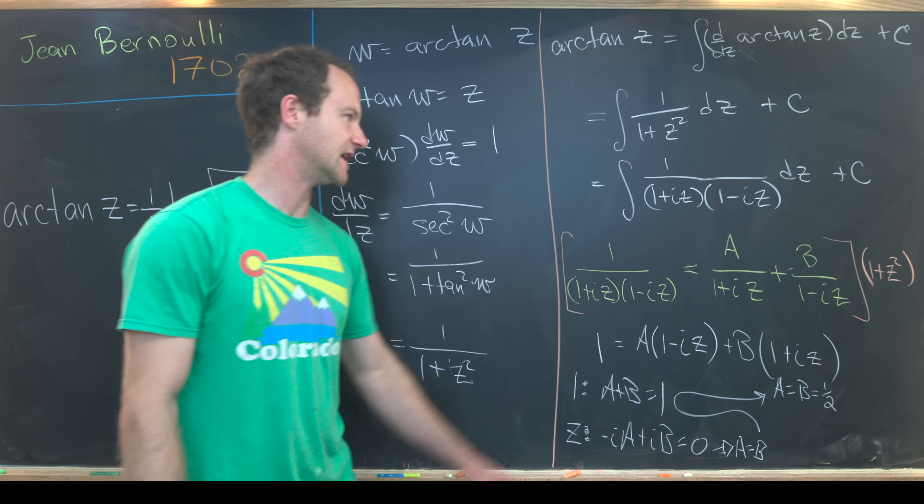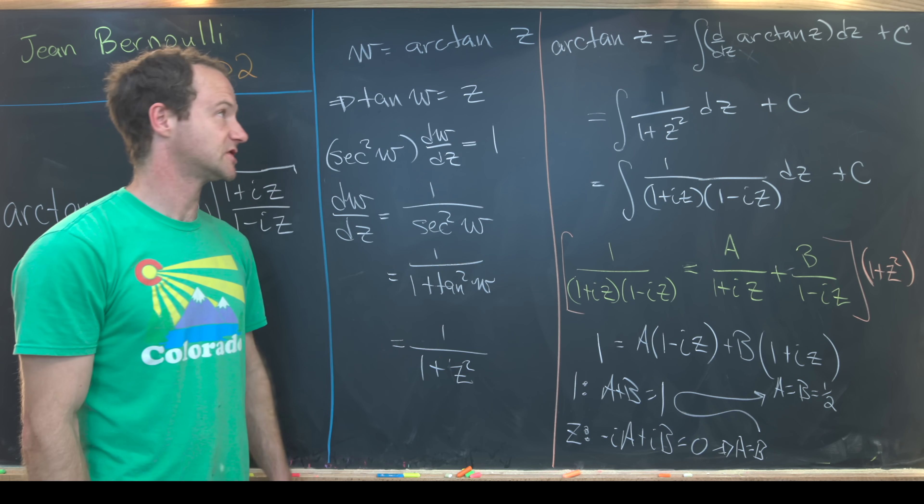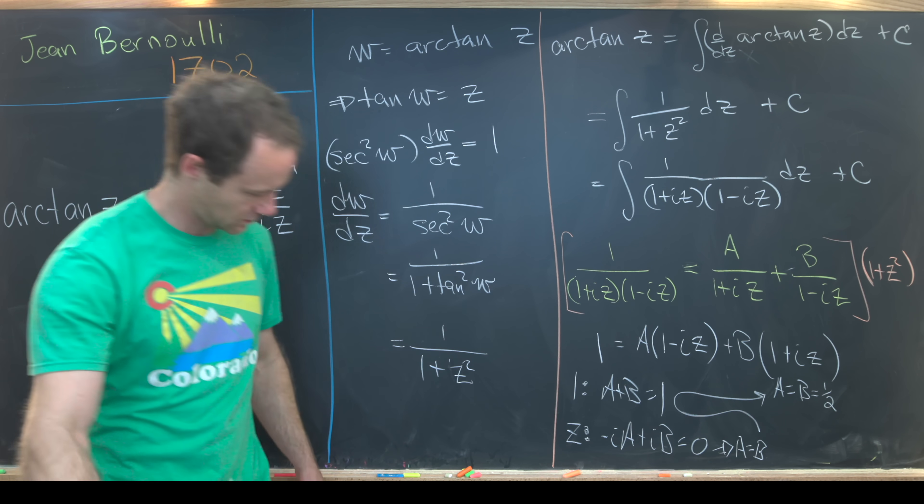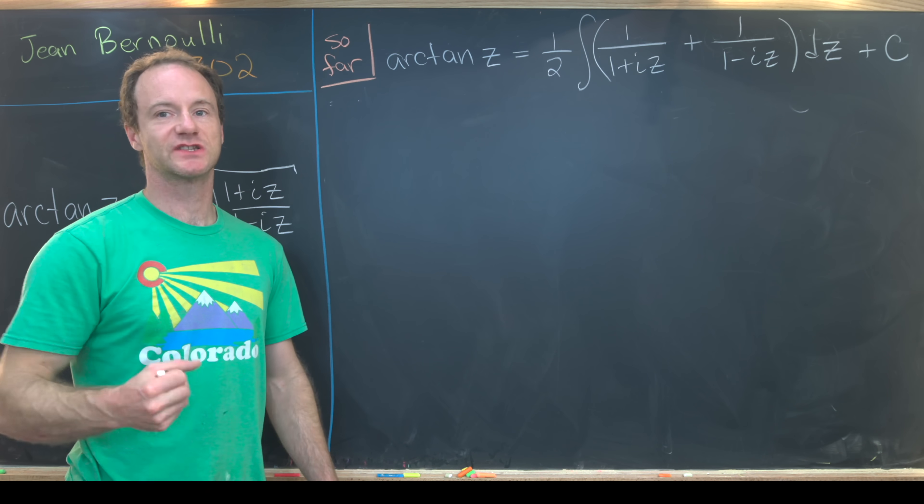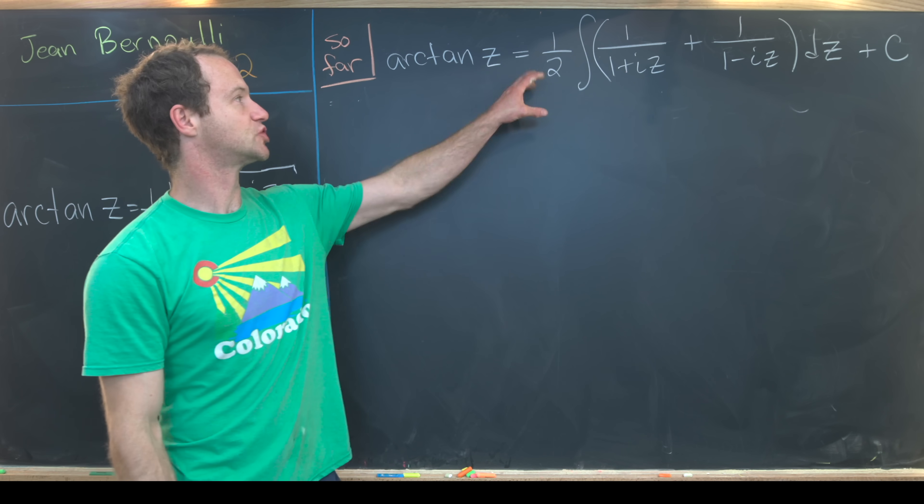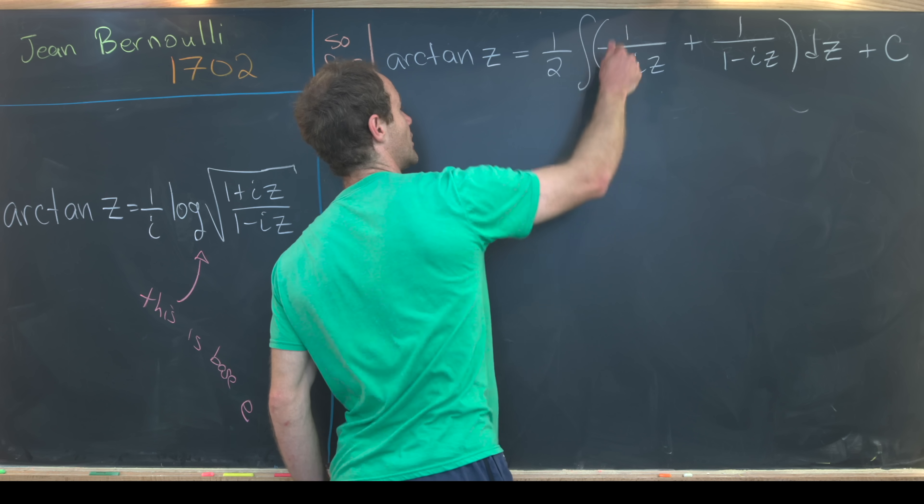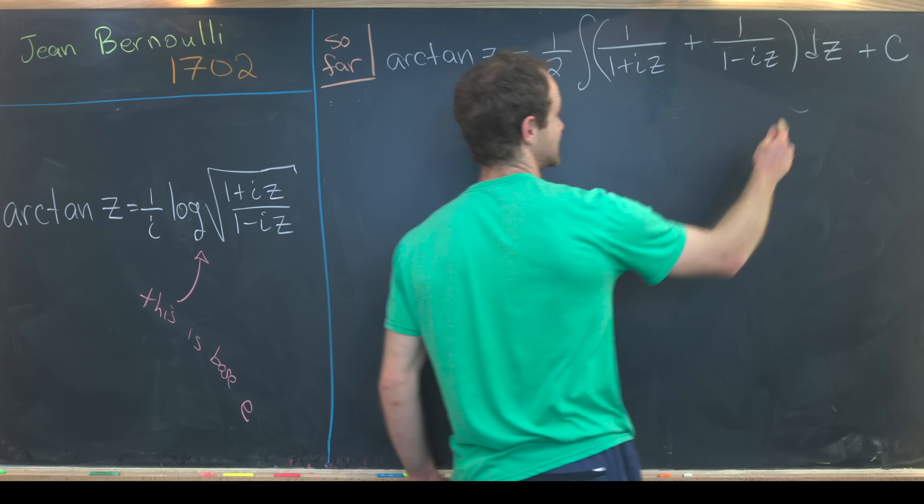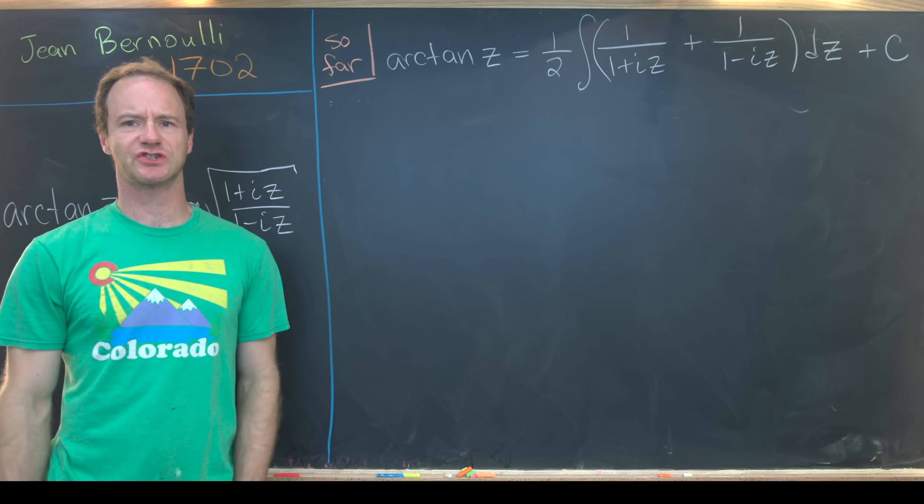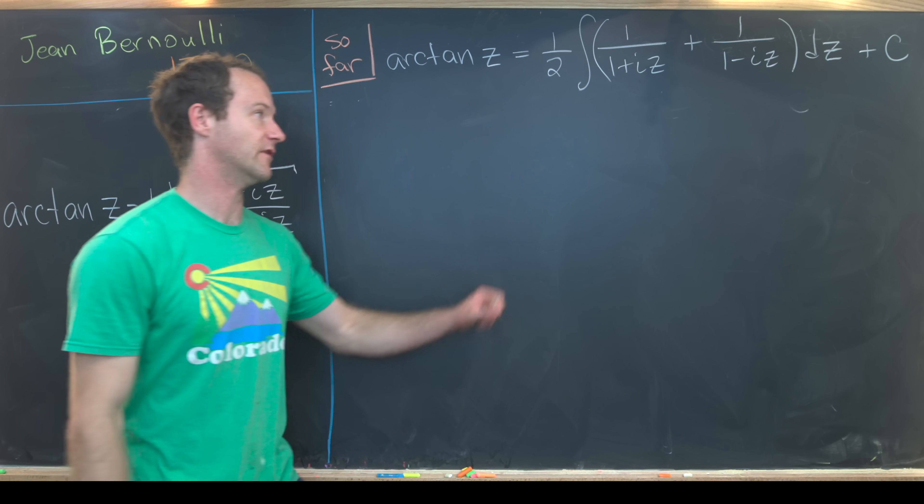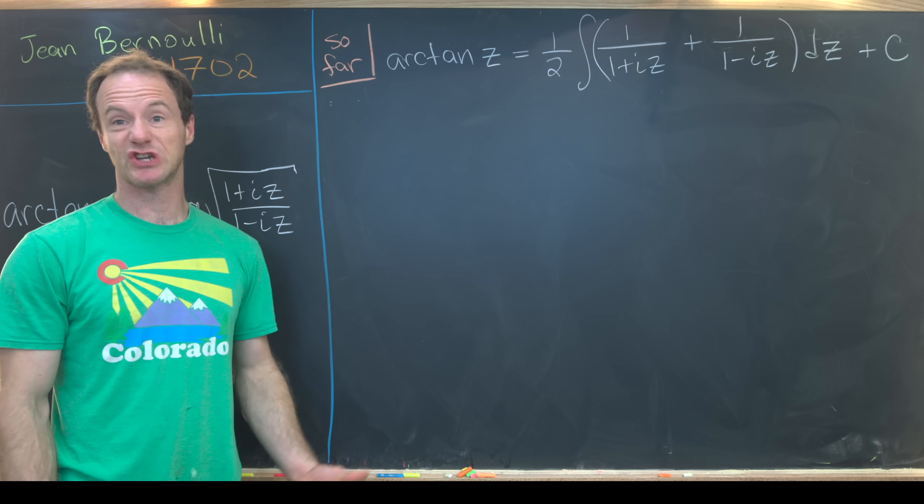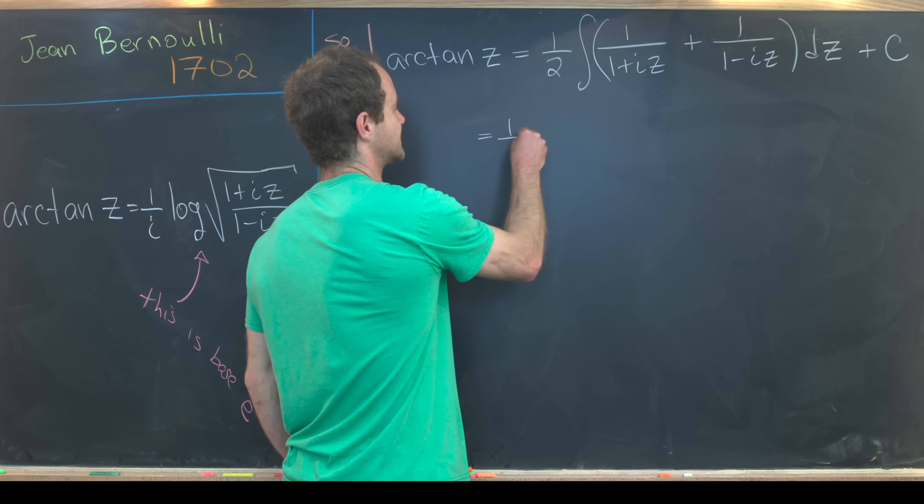Let's take this data, this partial fraction decomposition, and summarize everything we've got so far. Our last calculations left us at the following spot. We've got the inverse tangent of z is equal to one-half times the antiderivative of one over (one plus iz) plus one over (one minus iz) dz plus some sort of constant. We used partial fraction decomposition along with a couple of other things to get to this point. But now we're ready to take these antiderivatives.